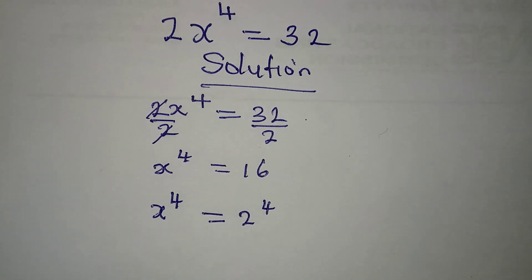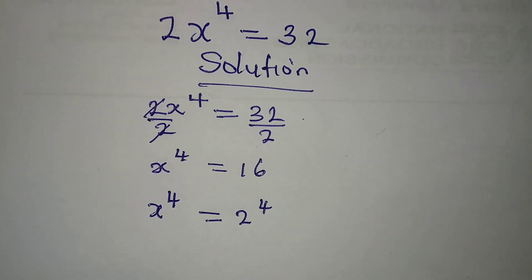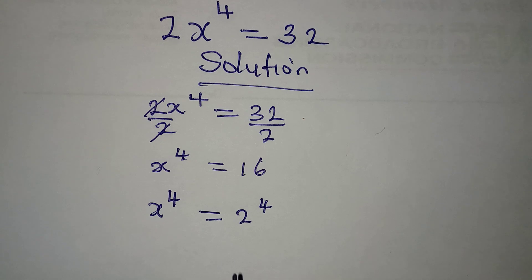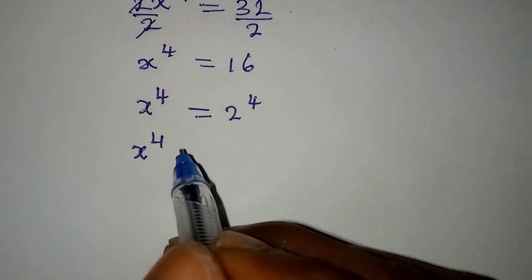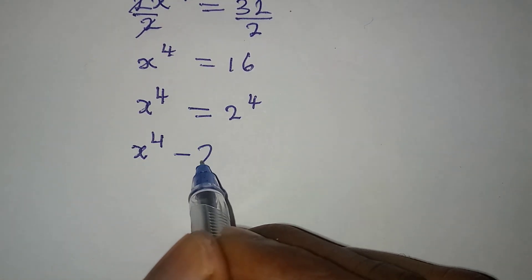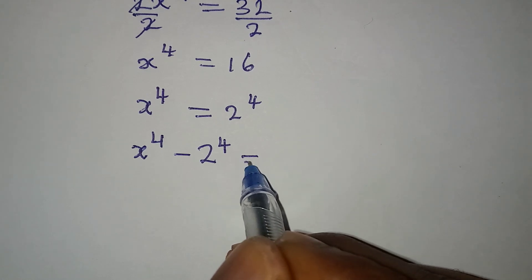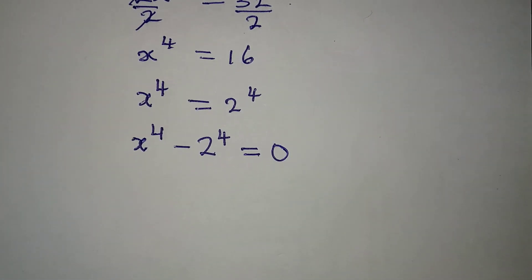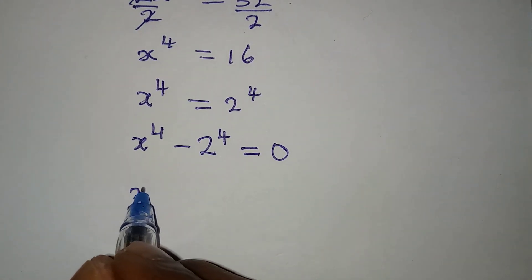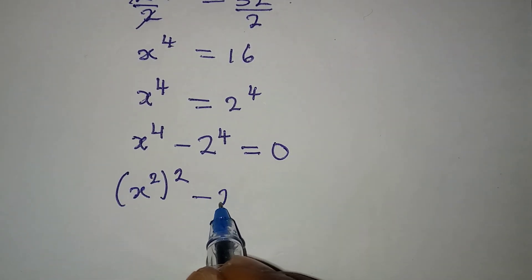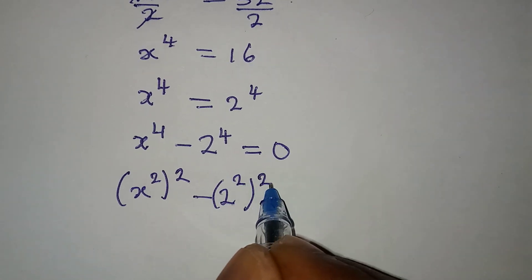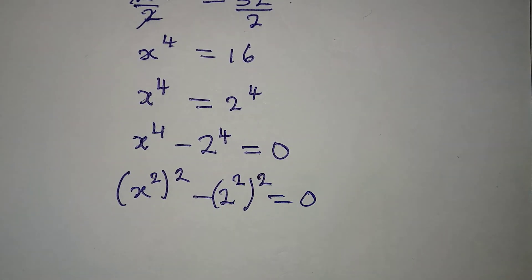So we now have that the bases are the same and the powers are the same. Let's bring everything to the left, so we have x to the power of 4 minus 2 to the power of 4 is equal to 0. This is the same thing as x to the power of 2 squared minus 2 to the power of 2 squared, and the whole of this is equal to 0.